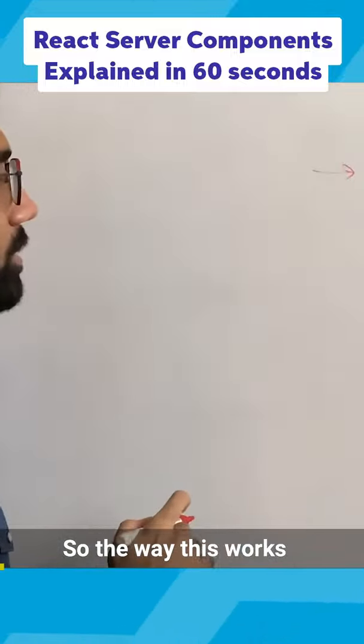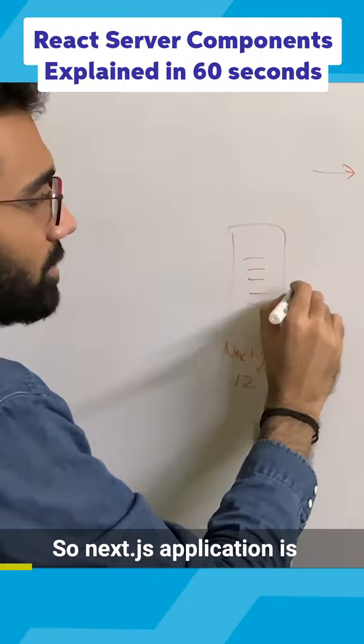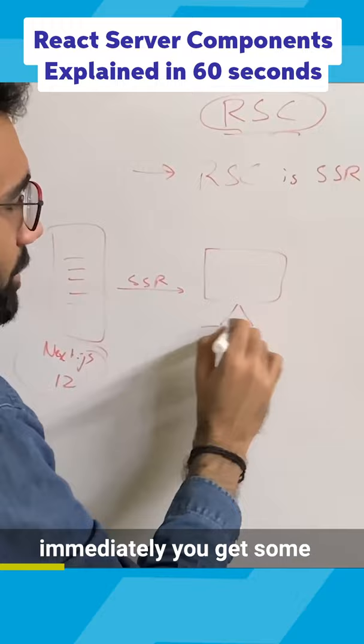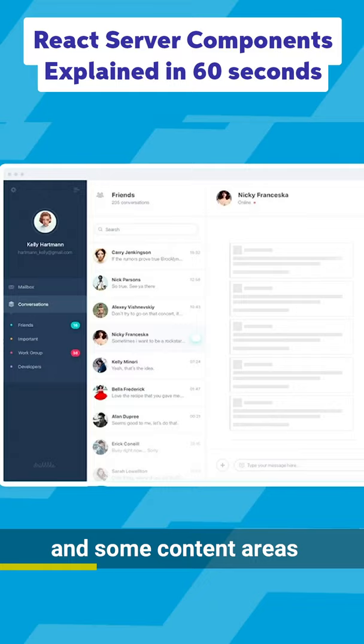The way this works is, imagine an application like Next.js. A Next.js application is server-side rendered, which means on the client immediately you get some areas which are populated, for example the sidebar, and some content areas might be loading.